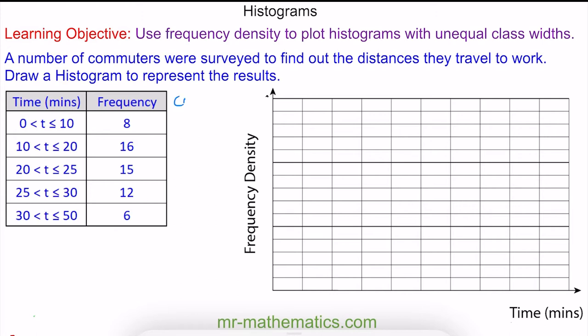In our first row we have a class width of 10 minutes. In our second row we've got another 10 minutes, which is the difference between 20 and 10. However, in our third and fourth row we've got a difference of five minutes, and in our final row a difference of 20 minutes.